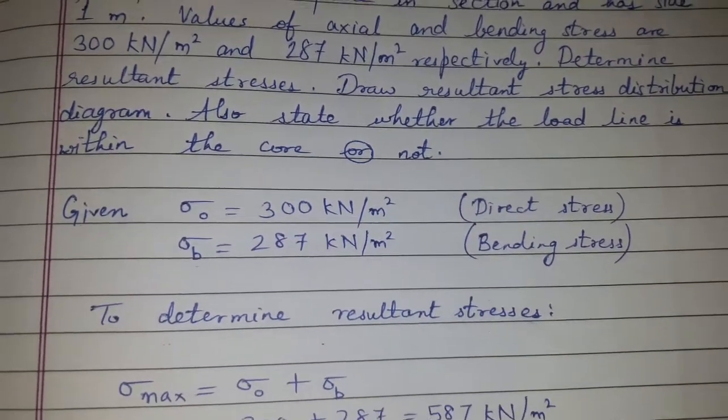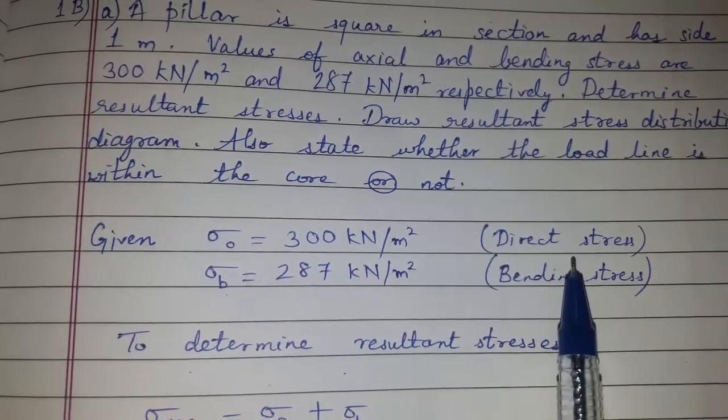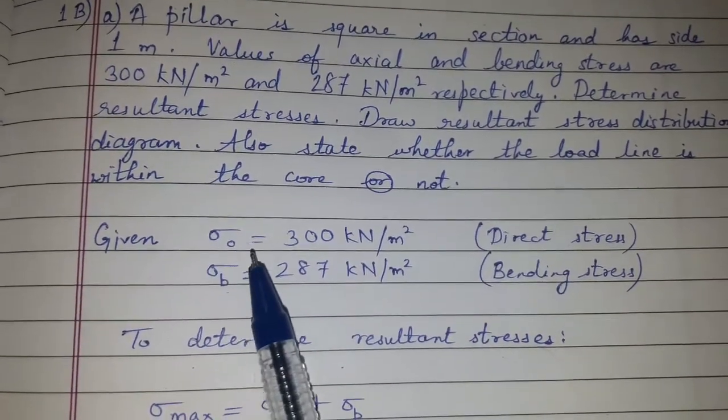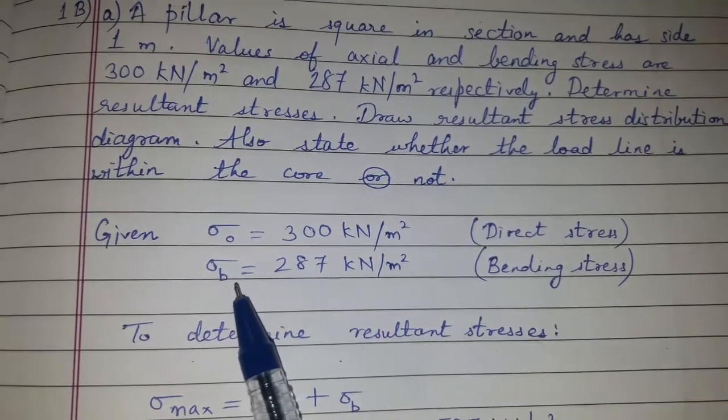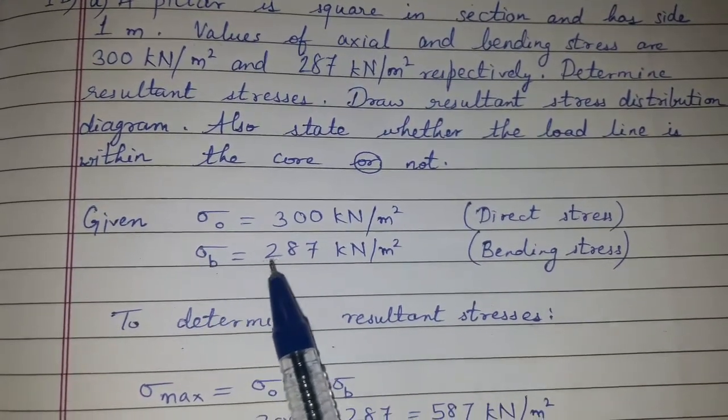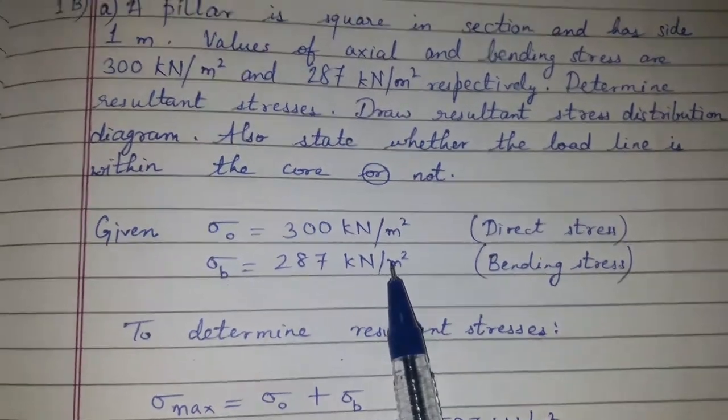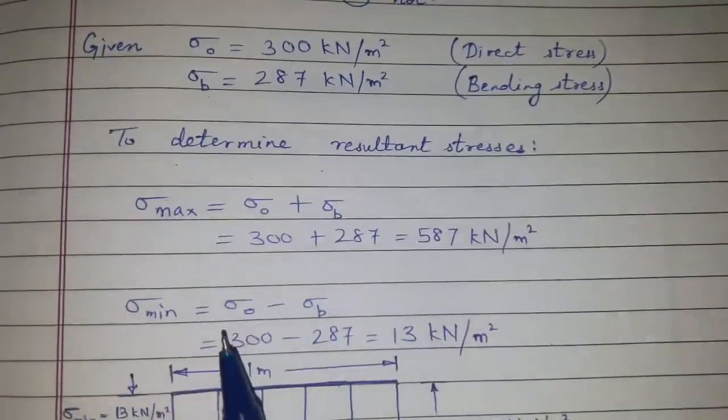So here given is axial stress, that is direct stress sigma 0 equals 300 kN per meter square, and bending stress, that is sigma b equals 287 kN per meter square. And now we have to determine the resultant stresses.